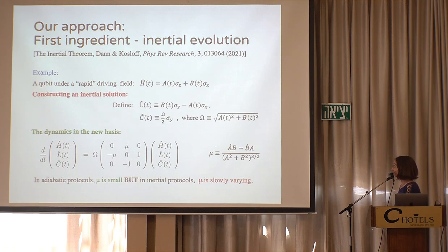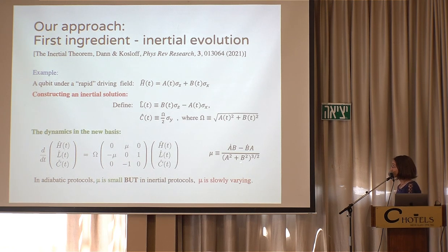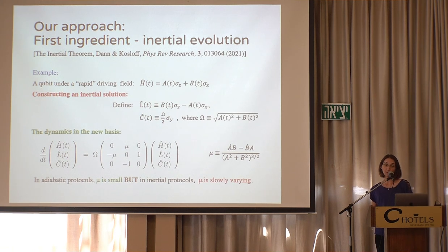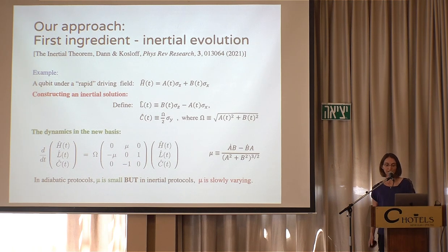So mu, defined here as something like the time derivative of the control fields, just needs its second-order derivatives to be small, not the first-order derivative. Without the math, the idea is that maybe we don't need to do things slowly — just accelerate slowly — and maybe we could find faster protocols. This is idea number one.